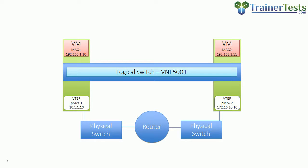Let's follow a packet through the VXLAN encapsulation process. Here we see two ESXi hosts, each with a virtual machine. These virtual machines are connected to the same logical switch, both in the 192.168.1 network — the same layer 2 segment. Between these hosts we have a physical router on the underlay network and a VTEP on each host.